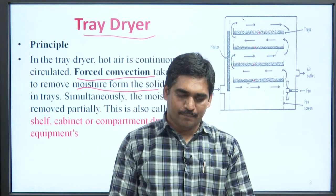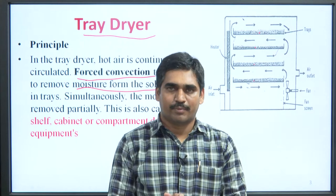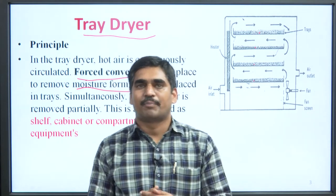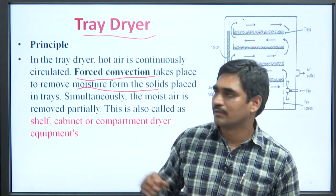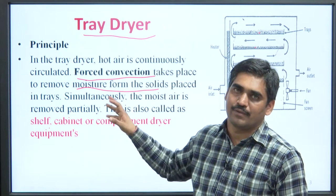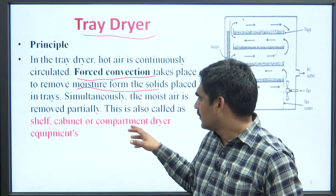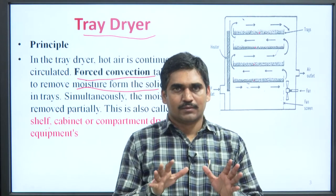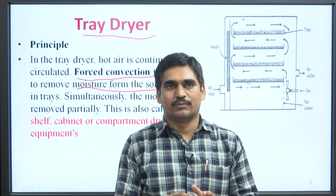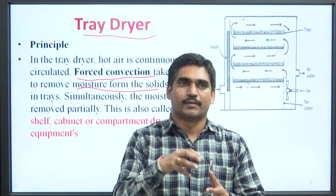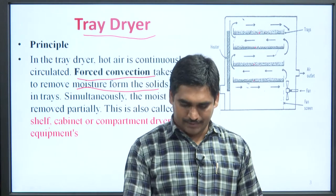Simultaneously, the moist air is partially removed. This apparatus is also called a shelf cabinet, shelf dryer, cabinet dryer, or compartment dryer. The key principle to remember is forced convection.